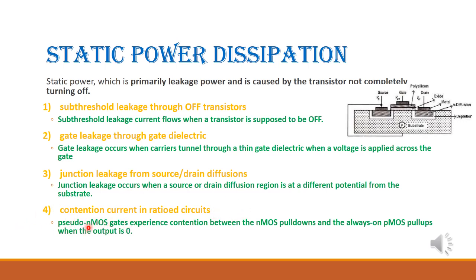These are the important causes for static power dissipation: sub-threshold leakage, gate leakage, junction leakage, and contention current leakage.